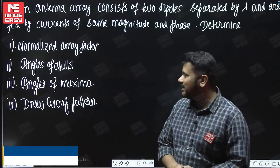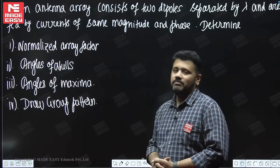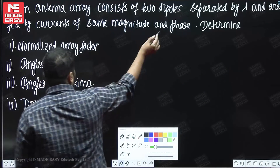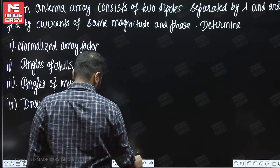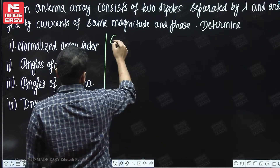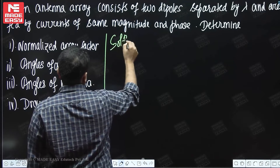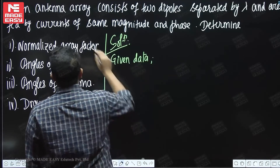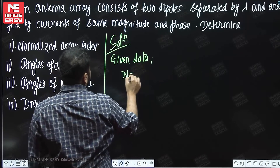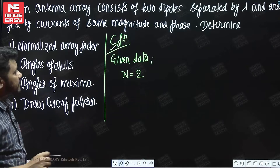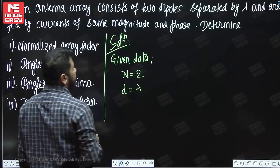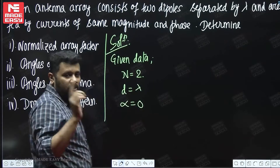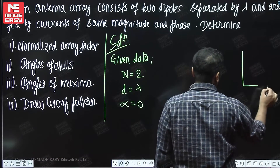It will become very easy, but there are 2 more things that have been added: angles of null and angles of maxima. These are 2 new things we are going to see in this question. So what is the given data? There are 2 dipoles — that means number of dipoles is 2, separated by lambda. So d = λ. There are students who have a little confusion on this, so I will try to clear it.